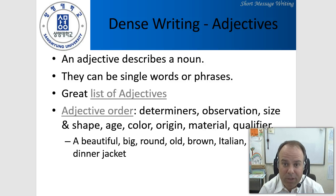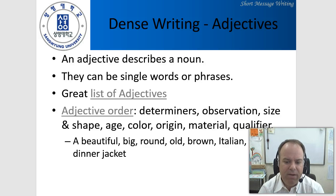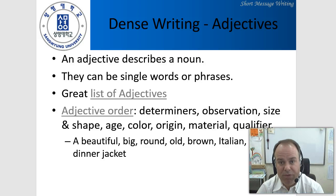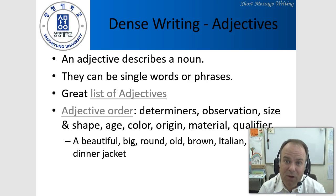We don't often make a long list of adjectives, but when we do, it's good to understand there's an expectation of which words appear first, second, and third. We have: determiners, observation, size and shape, age, color, origin (like where it's from), materials (what it's made from), a qualifier, and then the noun. For example: a beautiful, big, round, old, brown, Italian leather dinner jacket. You'll almost never use all of those adjectives, but knowing the order helps.